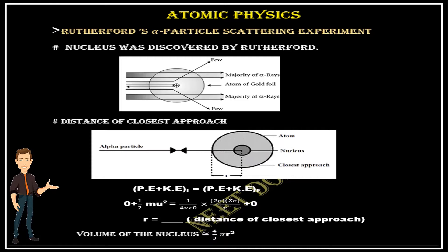In today's video, the first topic is Rutherford's alpha particle scattering experiment. The main point is that the nucleus was discovered by Rutherford — please don't confuse it with Chadwick. In this experiment, he sent many thousands of alpha rays through a gold foil. He found the majority of alpha rays passed without any deviation, only a few were deviated, and exactly one came back exactly opposite to the initial path.